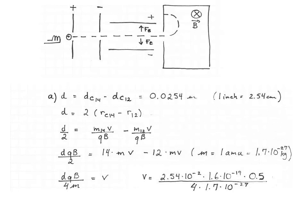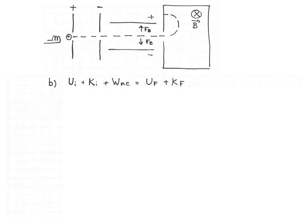Let's plug in the numbers. d = 2.54×10⁻² m, q = 1.6×10⁻¹⁹ C, B = 0.5 T, divided by 4 times 1 atomic mass unit (1.7×10⁻²⁷ kg), gives v = 3.00×10⁵ m/s. Now we have to figure out the potential differences necessary to accelerate the carbon-12 and the carbon-14 to this speed.